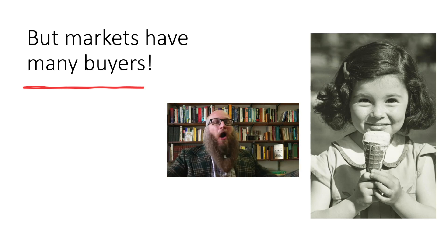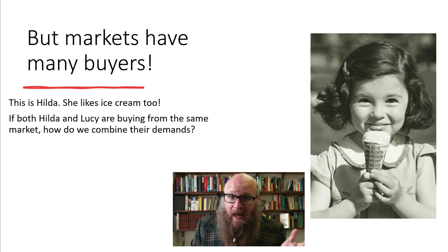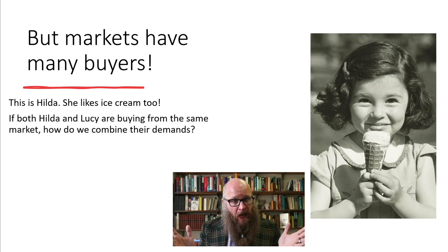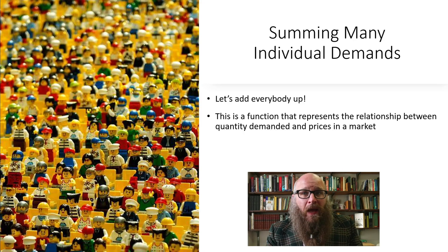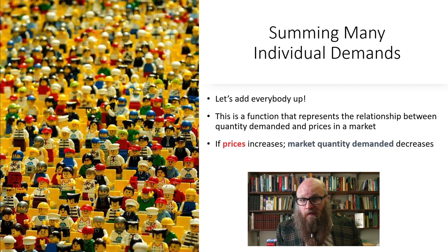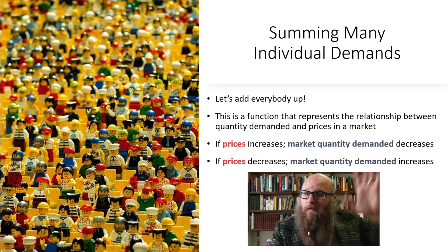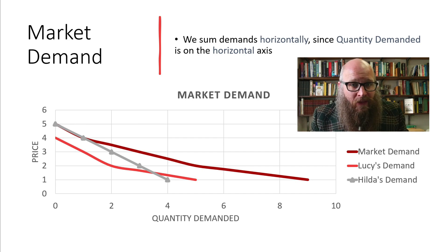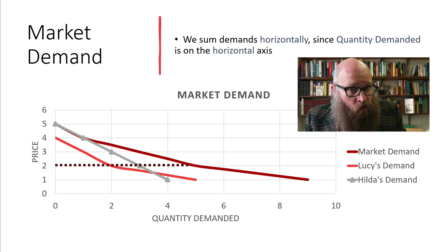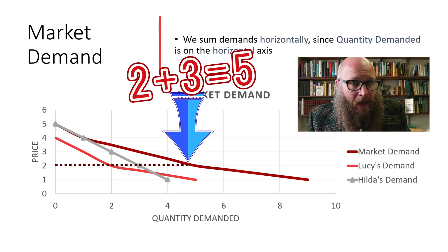Ice cream for some means ice cream for all. Markets are going to have many buyers — how do we do this for everybody? Hilda likes ice cream too. If both Hilda and Lucy are buying from the same market, how do we combine their demands? Here's Hilda's individual demand curve. We add everybody up — this is a function that represents the quantity demanded and prices in the whole market. If the price goes up, the market quantity demanded decreases; if the price falls, everybody goes out and buys it. Lucy's demand is the smallest, Hilda's is the second — we add them up horizontally and get the market demand. For example, when the price equals $2 a scoop, Lucy purchases two scoops and Hilda purchases three — two plus three equals the market quantity demanded of five.